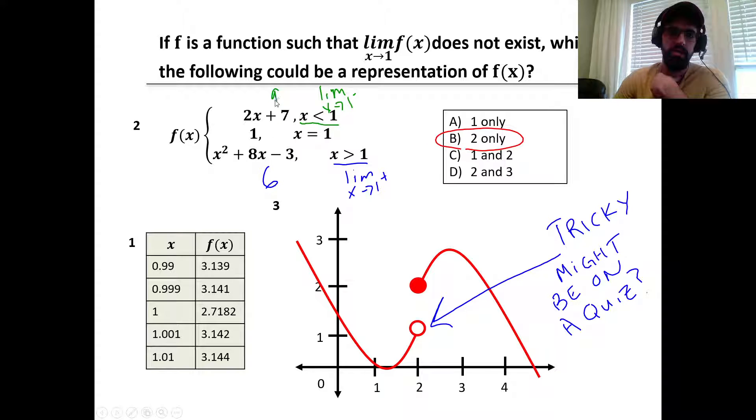So the limit from the left is 9. The limit from the right is 6. So the limit as x approaches 1 for this function does not exist. So this would work for our condition.